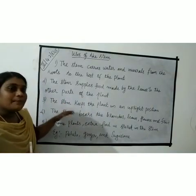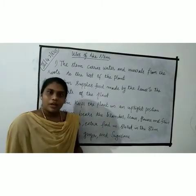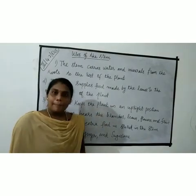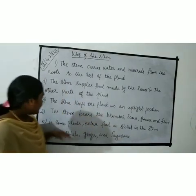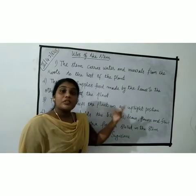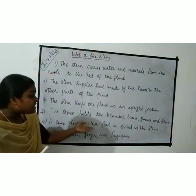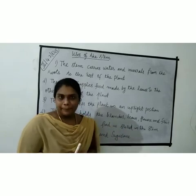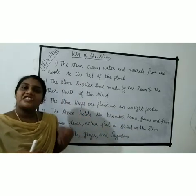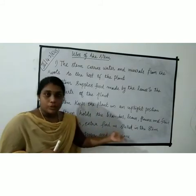The stem keeps the plant in an upright position. The stem also holds the branches, leaves, and flowers. In some plants, extra food is stored in the stem — for example, potato, ginger, and sugar cane.